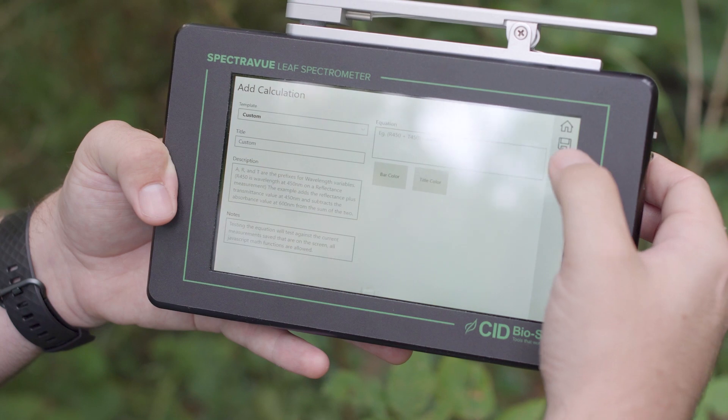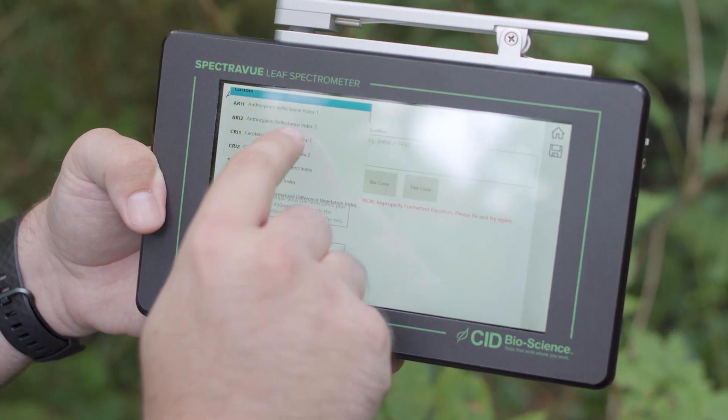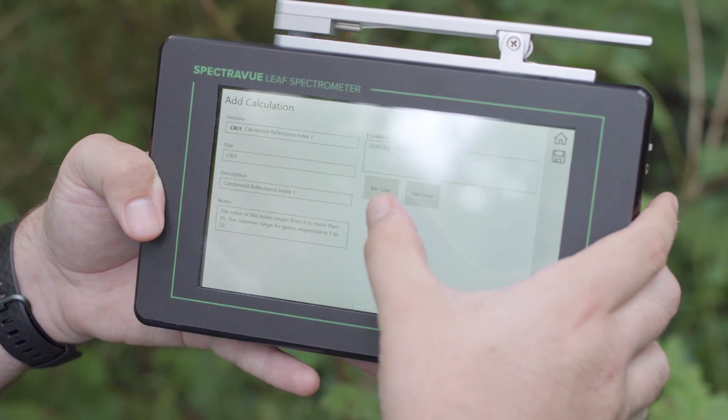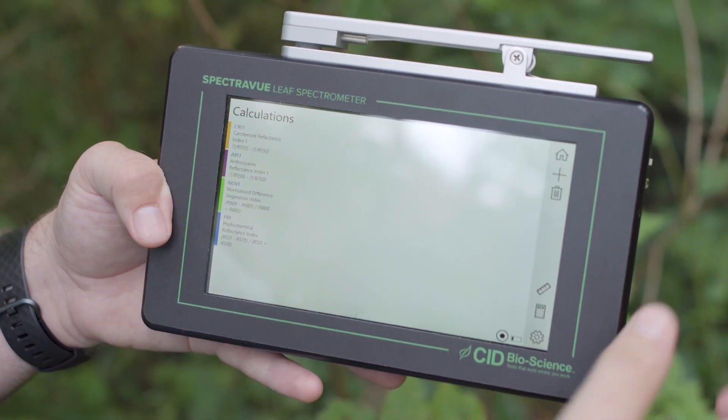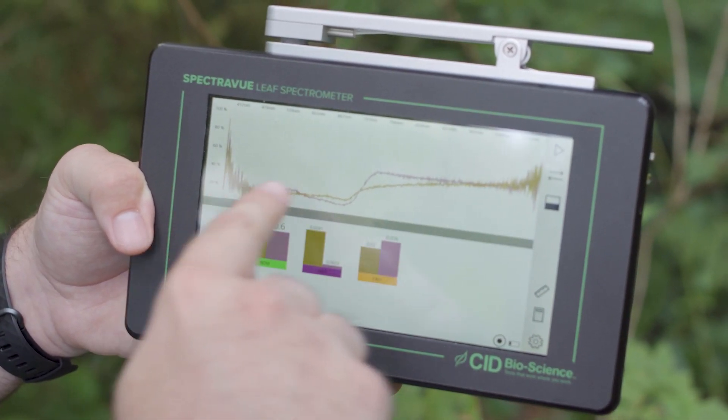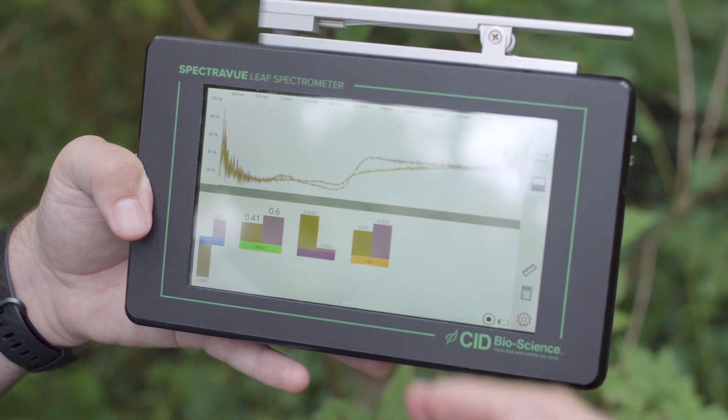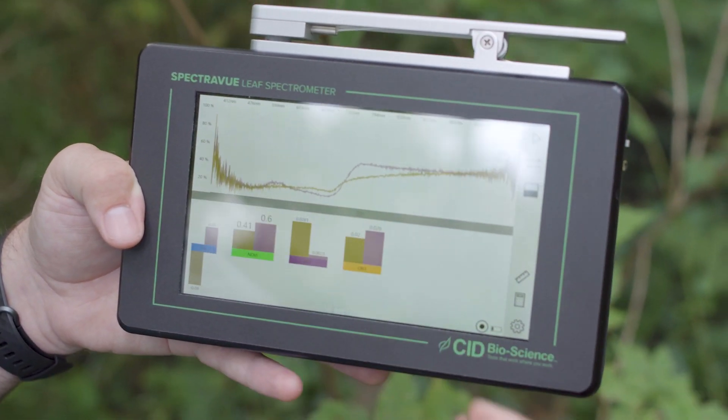When you go to save that, for instance, let me choose carotenoid reflectance index one. You can click save, that'll be saved, and when I go back to the home screen, you'll see that index has been added. Because I have the spectra here, that has been back calculated for us, so we can see the values for this index for the previously taken measurements.